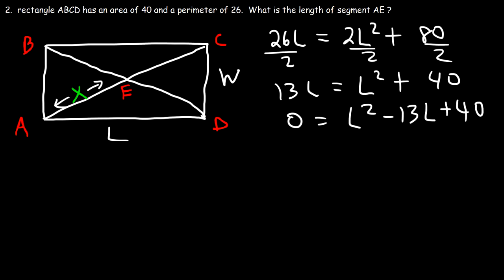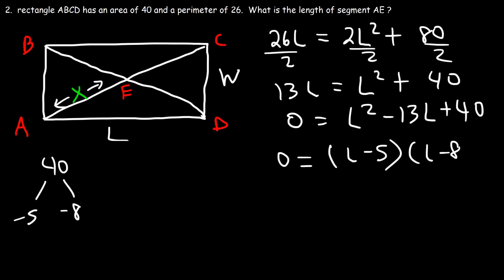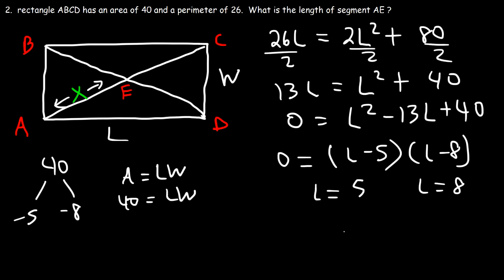We need to factor L squared minus 13L plus 40. Two numbers that multiply to 40 and add to negative 13 are negative 5 and negative 8. So it factors as (L minus 5)(L minus 8) equals 0, giving L equals 5 or L equals 8. Since 5 times 8 equals 40, if L equals 8 then W equals 5, and if L equals 5 then W equals 8.